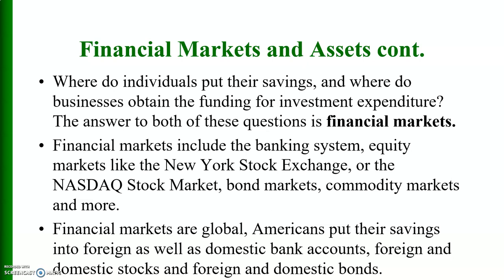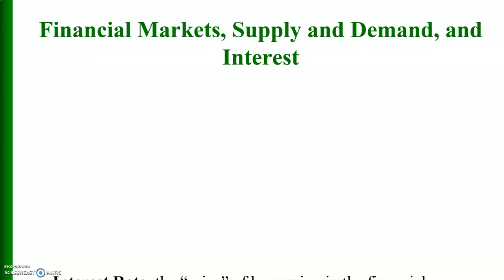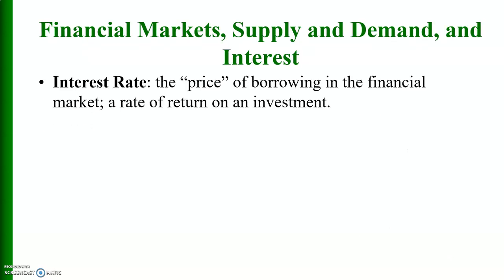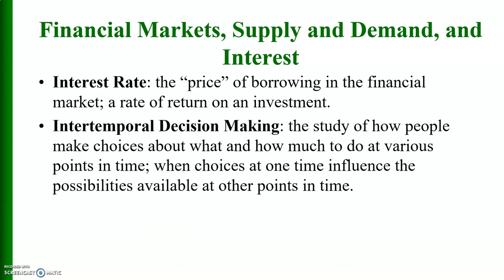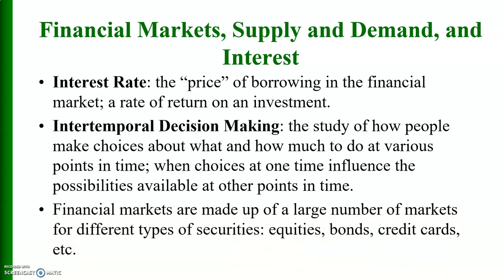Americans put their savings into foreign as well as domestic bank accounts, foreign and domestic stocks, and foreign and domestic bonds. Interest rates are the price of borrowing in the financial market and the rate of return on an investment asset. Intertemporal decision making is the study of how people make choices about what and how much to do at various points in time, when choices at one time influence possibilities at other points. Financial markets are made up of a large number of markets for different types of securities.